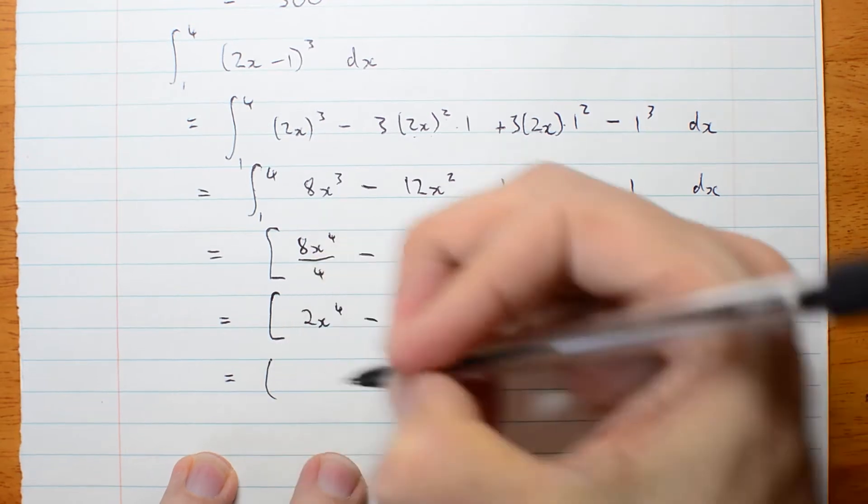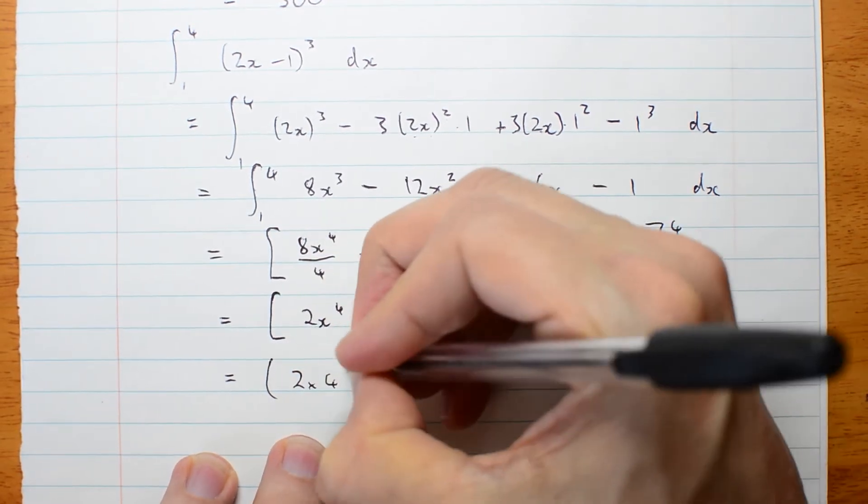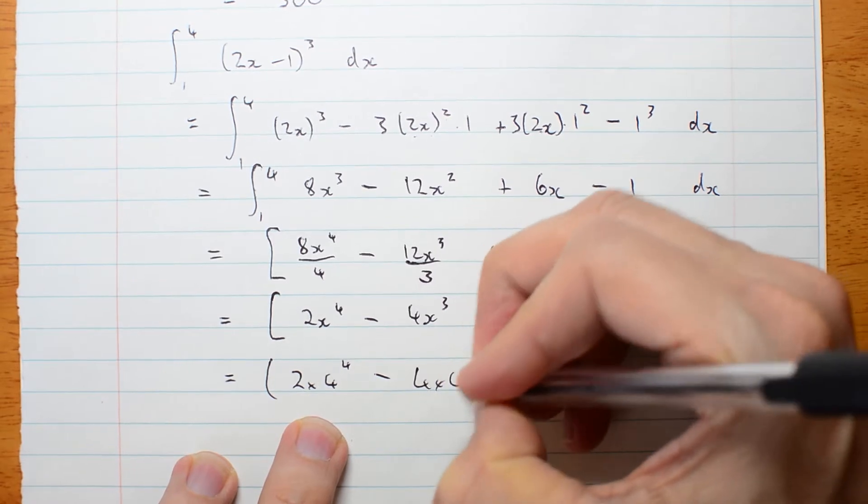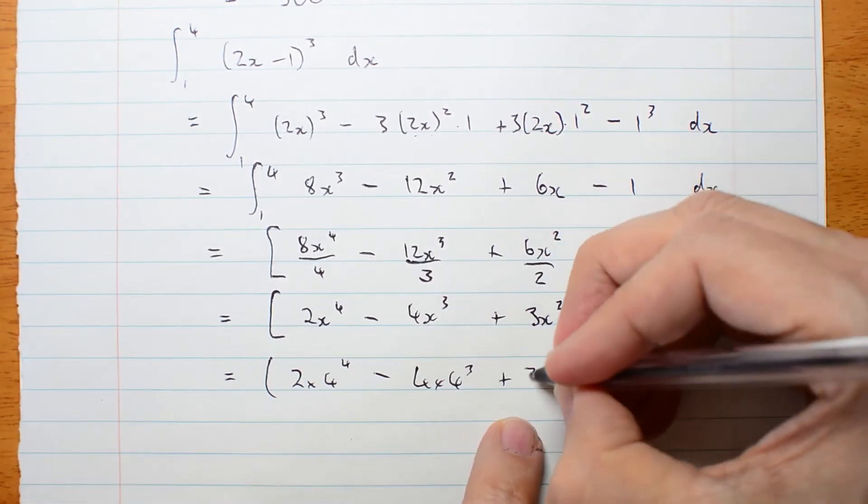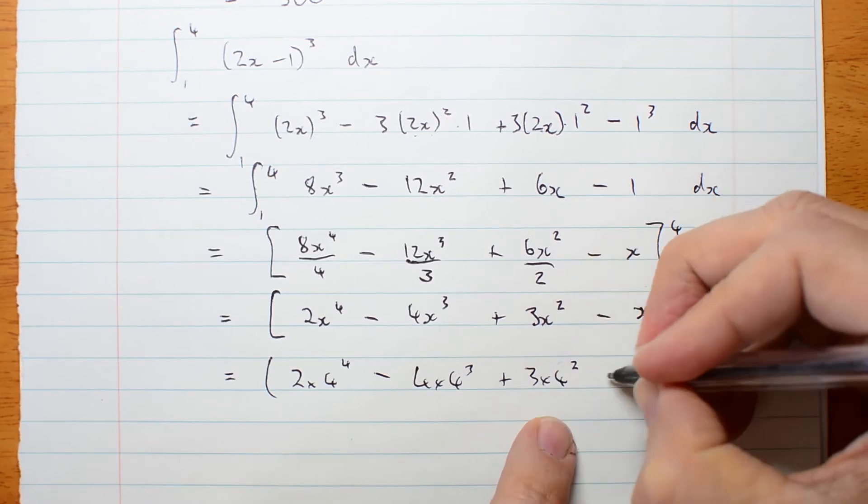Okay, at 4. 2 times 4 to the 4 minus 4 times 4 cubed plus 3 times 4 squared minus 4 minus,